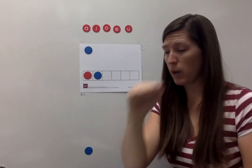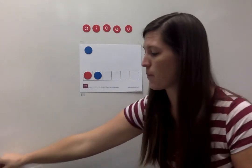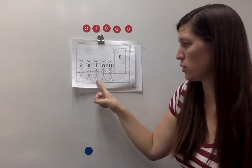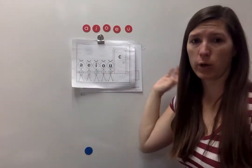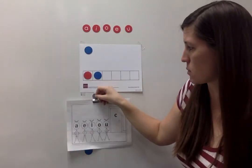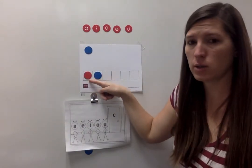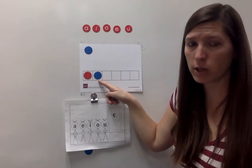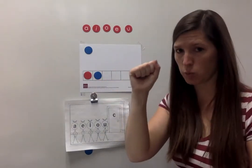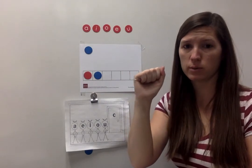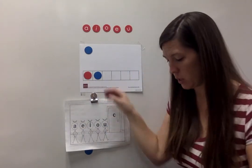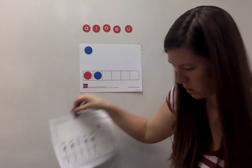Does it follow the closed syllable pattern? Closed syllable pattern: a short vowel sound followed by one or more consonants. I have a short vowel sound followed by one consonant — it is closed. The door is closed. Put your fist up, say 'closed syllable'. Short vowel sound followed by one or more consonants. Very good.